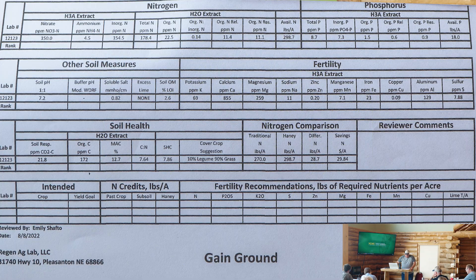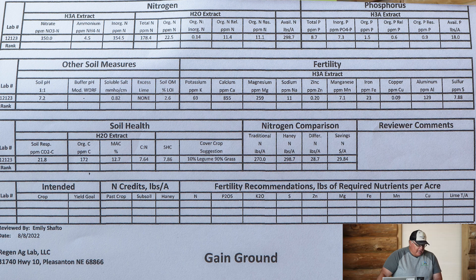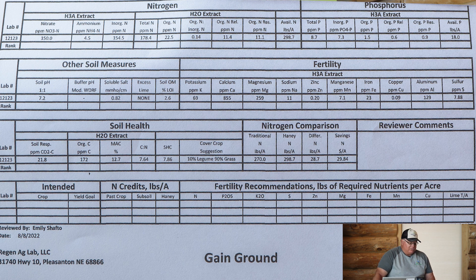One of the first things I look for on these tests is the inorganic to organic nitrogen. That's directly under the H2O there — a column that says organic N to inorganic N. That's telling us the nitrogen in the soil the day this test was taken. The inorganic form is mineralized and available to the plant. The organic form is tied up either in a growing plant, residues, etc.